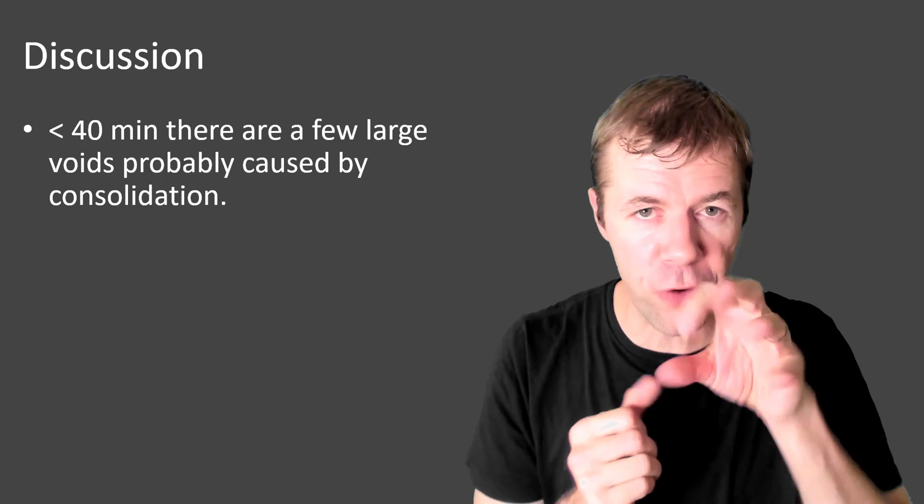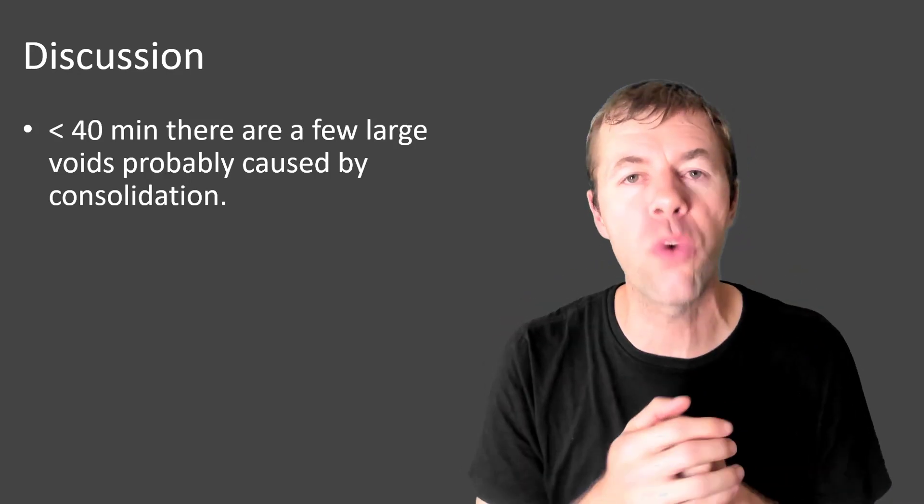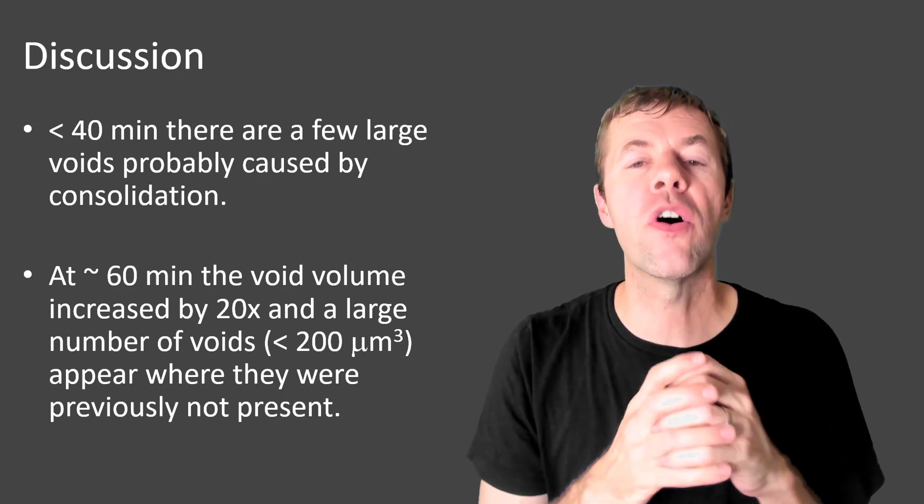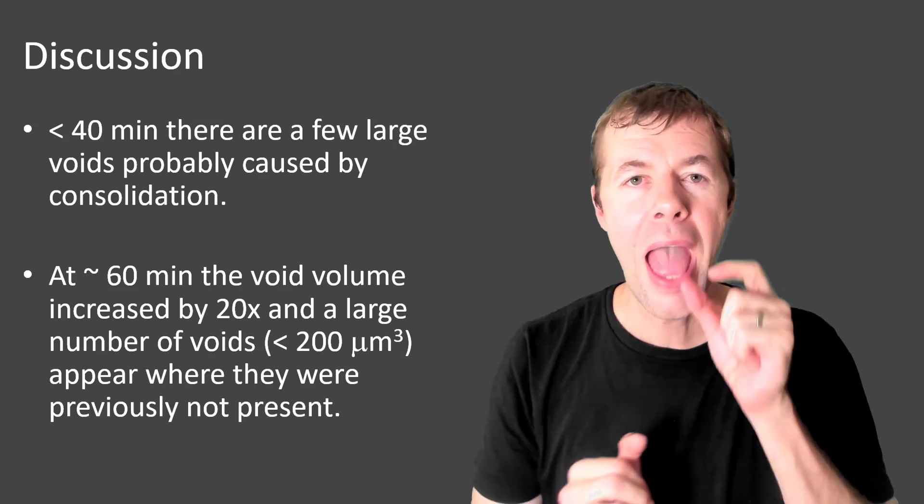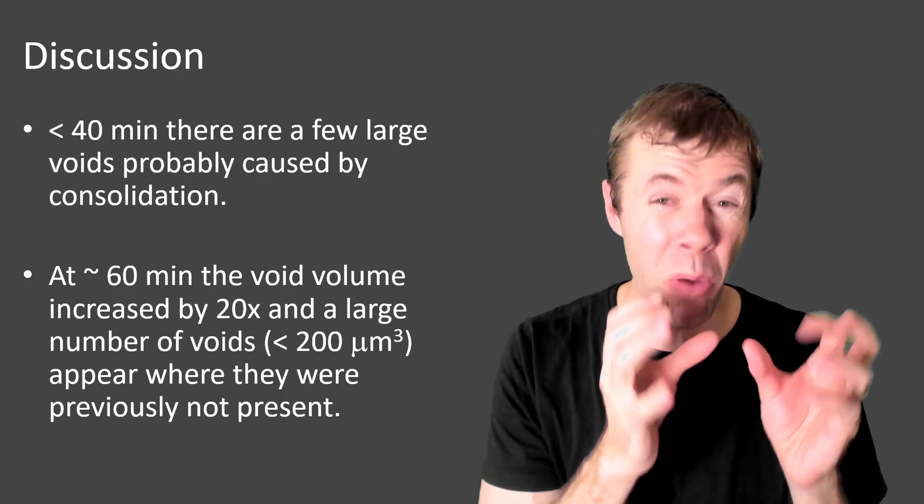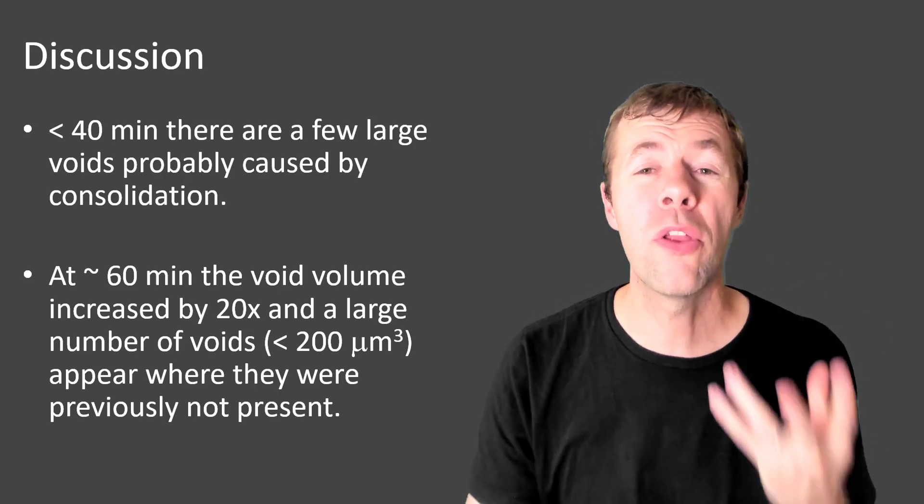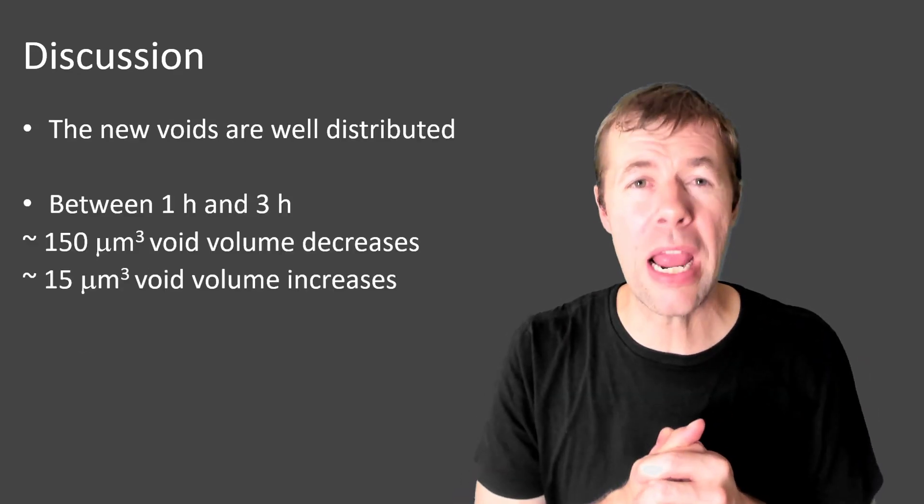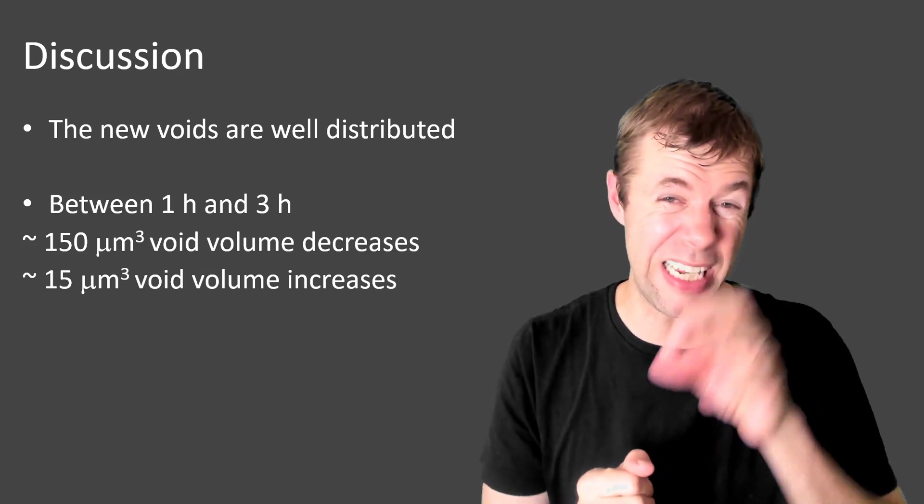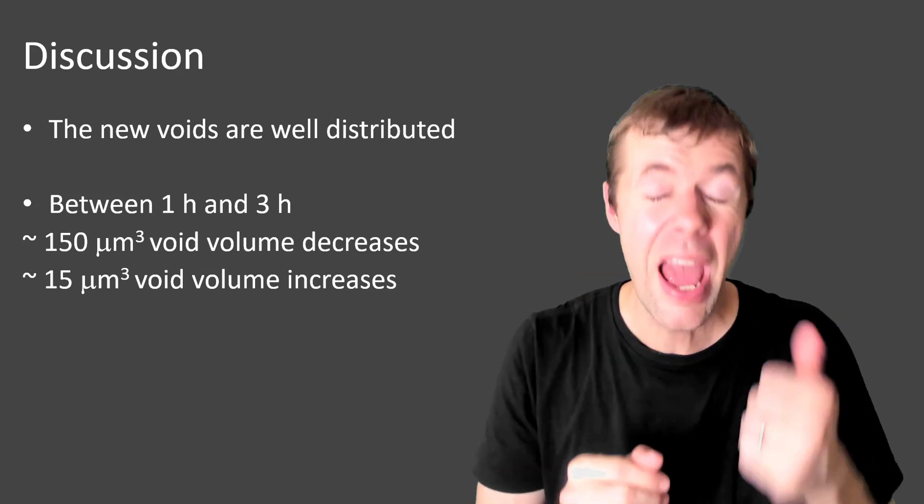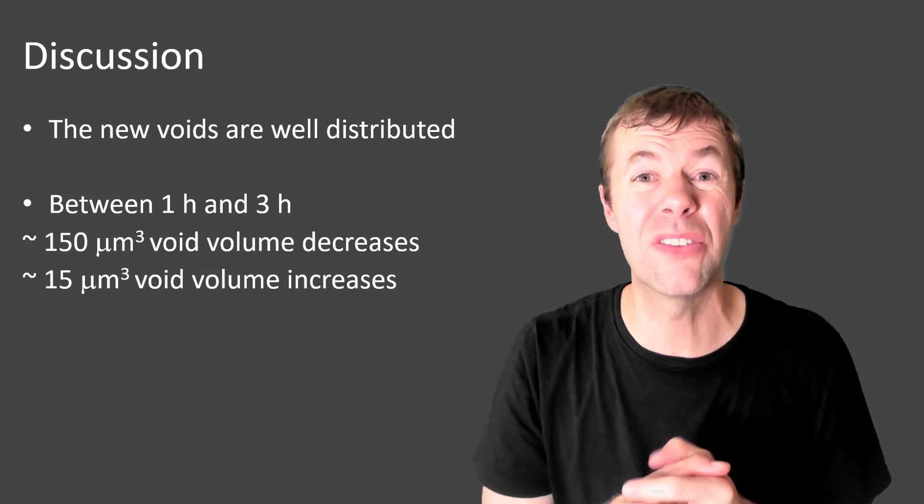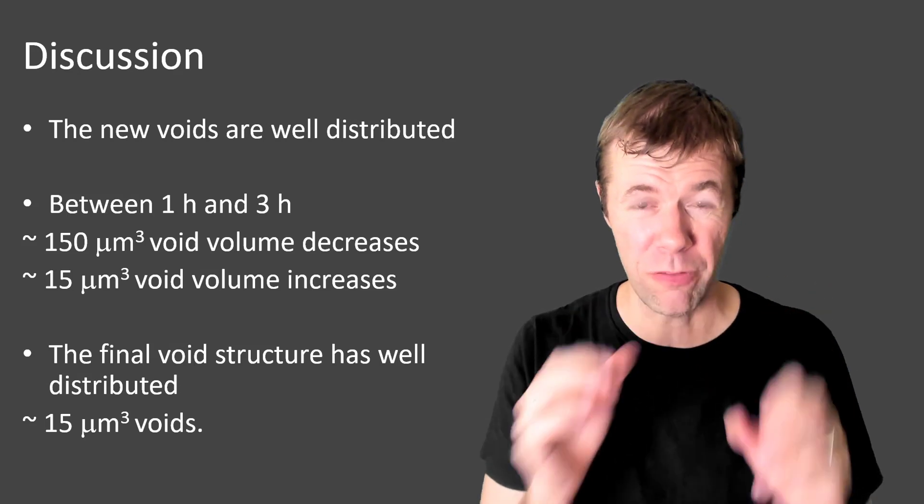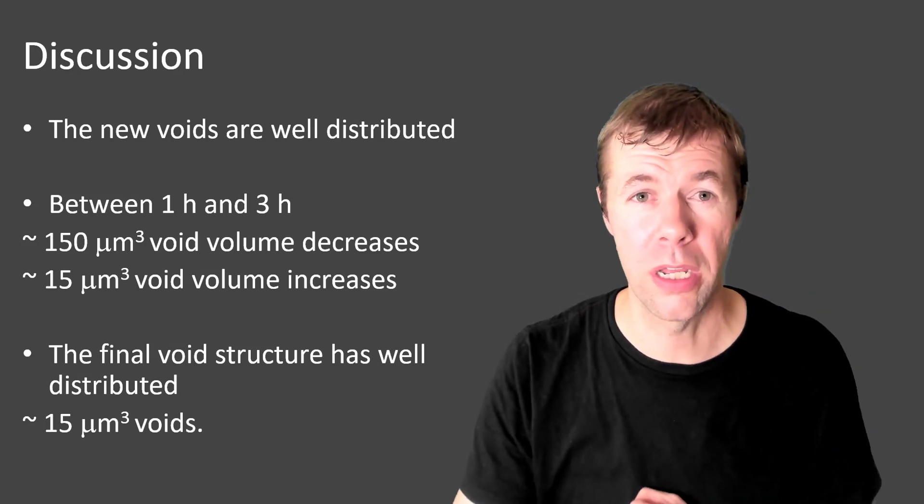What can we say about this? In the first 40 minutes, there are a few large voids that are probably caused by consolidation. At about 60 minutes or so, the void volume explodes. There's about a 20 times increase. And a large number of voids that are smaller, less than 200 cubic microns, appear where they're previously not present. And they're pretty well distributed. Between one hour and three hours, these 150 cubic micron voids decrease in size. That's the mid-size voids. And the smaller voids, the 15 cubic micron or so voids, start to increase. And the final void structure was well distributed, mainly formed of these 15 micron cubic voids.